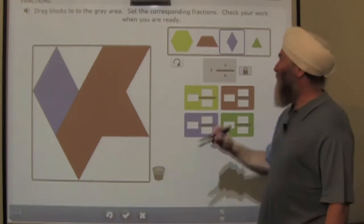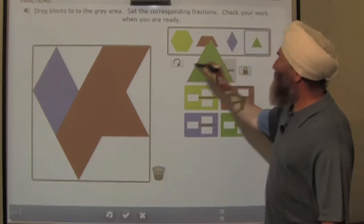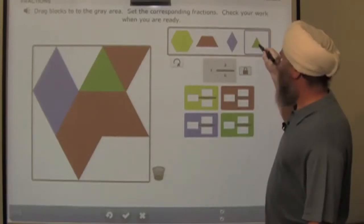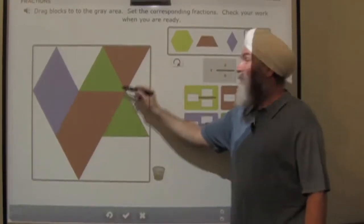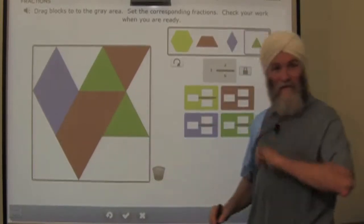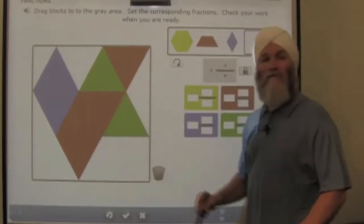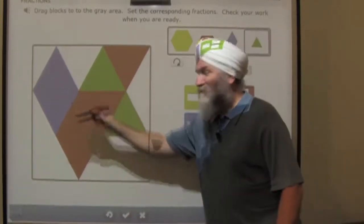Now I can also change the colors if I want to. I can add some green. And now here's what I've got: 1, 2, 3, 4 sixths are red, 2 sixths are green, 2 sixths are blue.